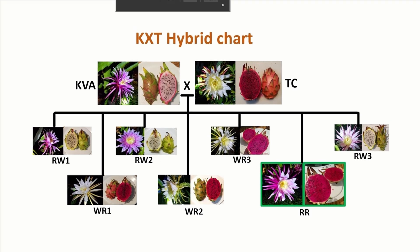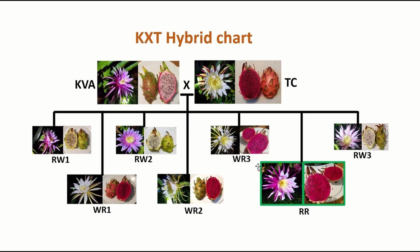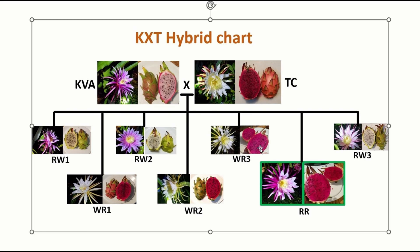All calculations are based on possibilities — the real result could have some variation, it's not completely accurate. So at least this experiment demonstrates that the red flower genes and red fruit genes are dominant genes. Also, KVA has a very high Brix number, and WR1, which has a white flower and red fruit, is a very sweet hybrid. RR is very sweet and RW3 is also very sweet. So almost half of the hybrids have the super sweet genes — probably the super sweet gene is also a dominant gene.